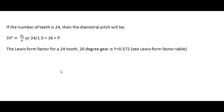If we're going to settle on a tooth number of 24, we can calculate the diametral pitch using this equation. The diametral pitch is equal to the number of teeth divided by the diameter — in our case, 24 teeth divided by 1.5, which equals 16, which we'll henceforth refer to as P, the diametral pitch.